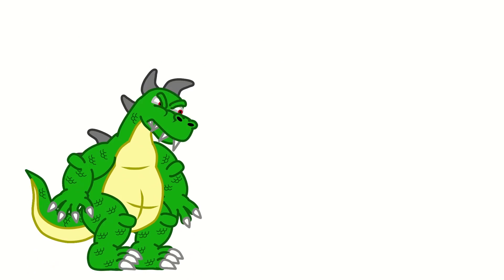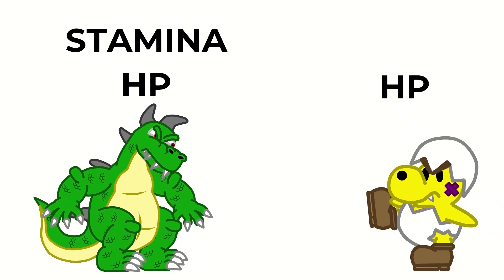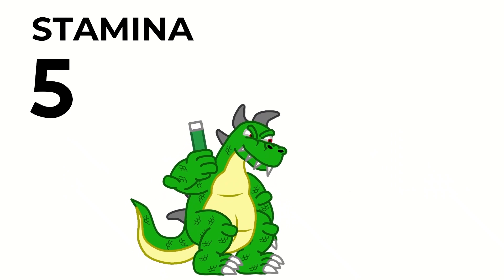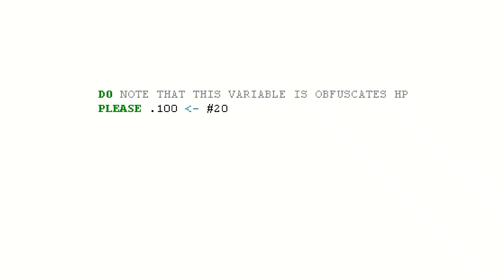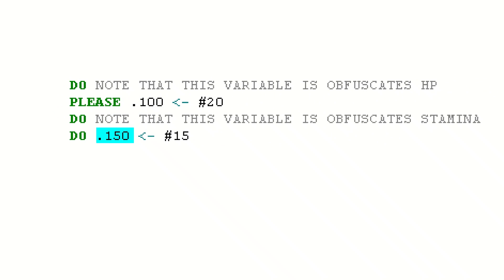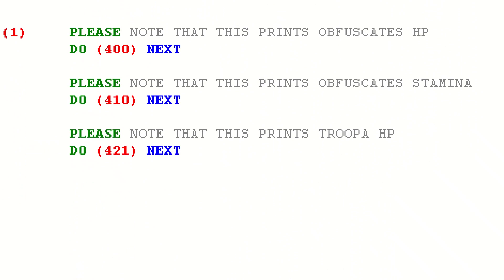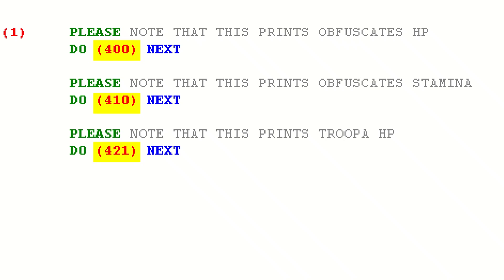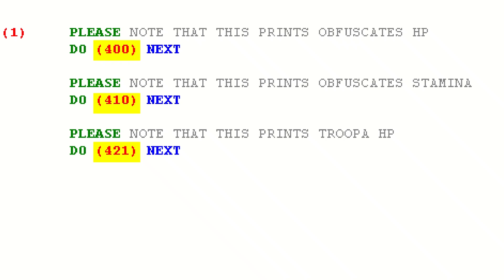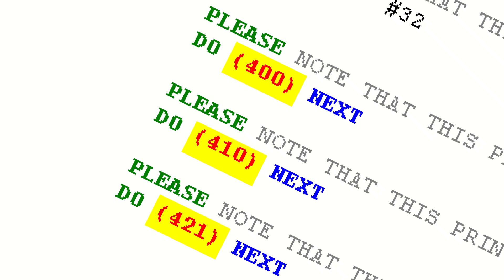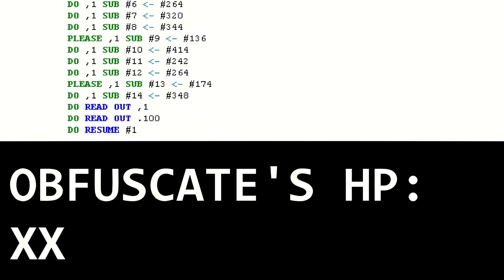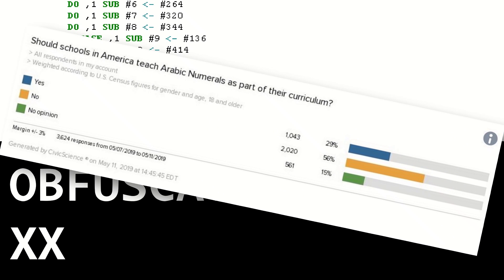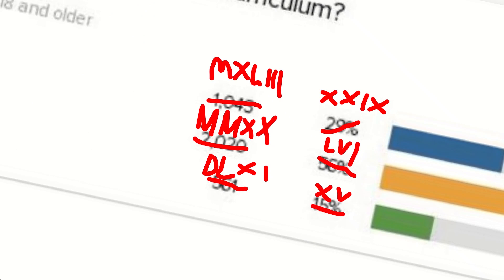Now we can get to the interesting stuff. This game only has three variables that we care about: Obfuscate's HP, Junior Troopa's HP, and Obfuscate's Stamina. Obfuscate's HP is stored in the variable designated as Spot 100, his stamina is stored in Spot 150, and Junior Troopa's HP is in Spot 200. Each turn begins by printing these three variables, each with a label printed through a subroutine called the string table. Everything in Intercal is labeled with an arbitrary number. When integers are read out to the screen, they are printed as Roman numerals, so this game requires the player to be able to read Roman numerals. Since 56% of Americans believe we shouldn't use Arabic numerals, I guess it's future-proof!